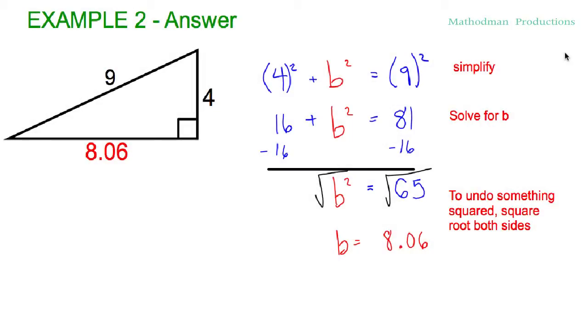Here's the answer for example two. Hopefully you got it right. The missing length was one of the legs. The hypotenuse is right here, so that's my c in the equation. This can be a or b. It doesn't matter if you mixed it around. You're still going to get the same answer.